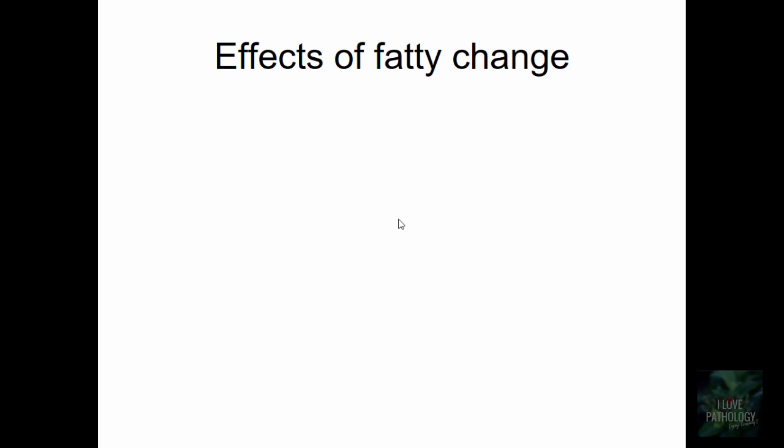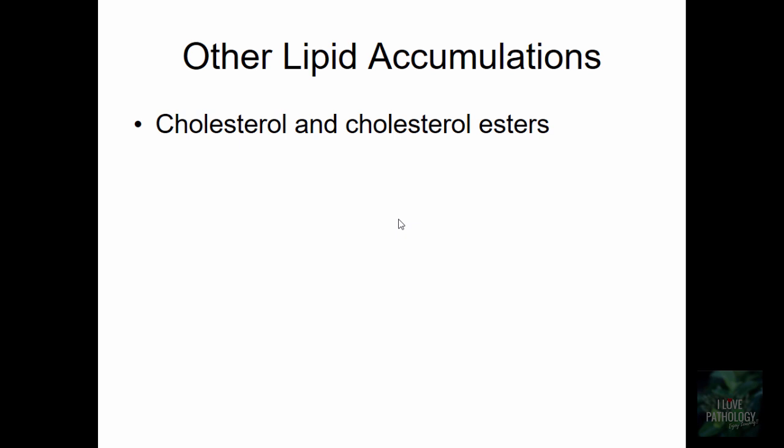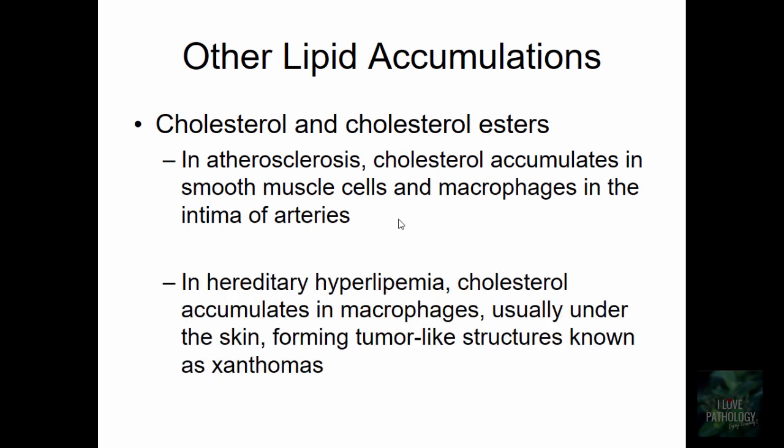What are the effects of fatty change? If it is mild, there may be no effects. But if it is severe, it can impair function because of irreversible cell damage. Moving on to other lipid accumulations — cholesterol and cholesterol esters: the most common example is atherosclerosis, where cholesterol accumulates in smooth muscles and macrophages in the intima of arteries. In hereditary hyperlipidemia, cholesterol accumulates in macrophages under the skin, forming tumor-like structures known as xanthomas.